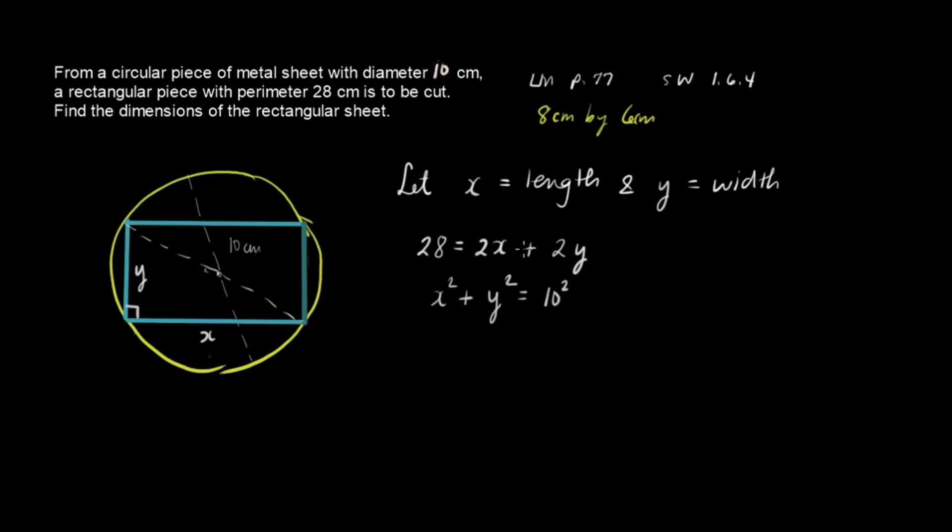And then we're going to solve this. This is our system. And this is a line and a circle. A circle with radius 10 and then a line.